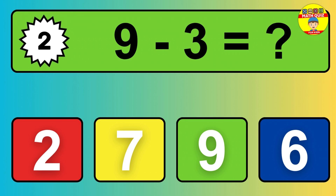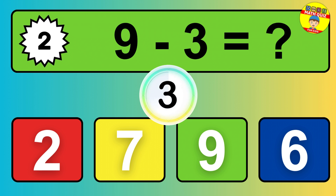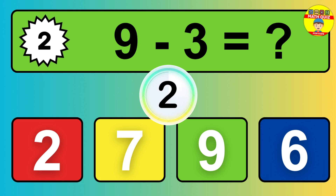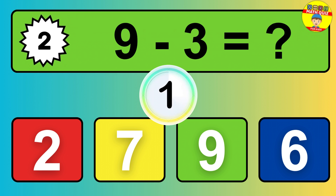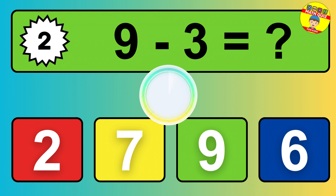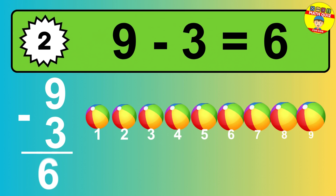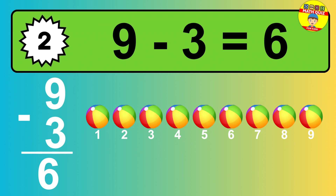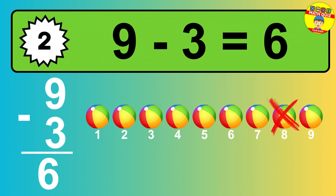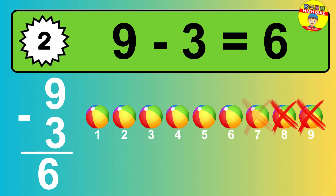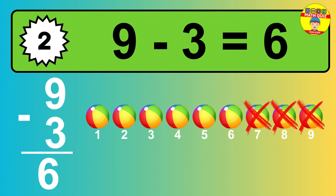Question two: nine minus three equals what? So the answer is, nine minus three is six. Let's count it. One, two, three, four, five, six.